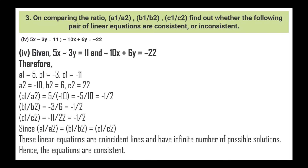Next: 5x - 3y = 11 and -10x + 6y = -22. So a1 = 5, b1 = -3, c1 = -11, a2 = -10, b2 = 6, c2 = 22. a1/a2 = 5/-10 = -1/2, b1/b2 = -3/6 = -1/2, and c1/c2 = -11/22 = -1/2. Since a1/a2 = b1/b2 = c1/c2, these linear equations are coincident lines and have infinite numbers of possible solutions. Hence the equations are coincident.